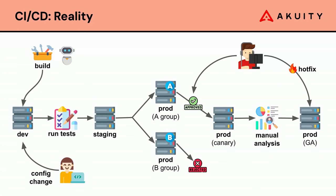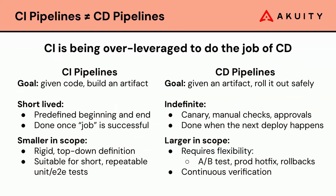Exactly. When we think about the tools people use to power this orchestration — CI systems, Jenkins, GitHub Actions — we feel they're being over-leveraged, trying to do the work of CD that they weren't originally built for. Everyone talks about CI/CD under the same breath as if it's one thing, but fundamentally CI and CD have quite different goals.